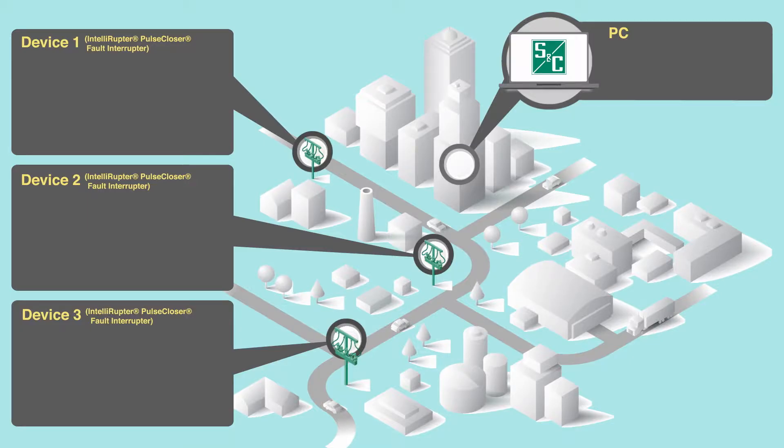Before leaving to install Speednet gateways in the field, carry out the following pre-installation steps. Step 1: Contact the cellular service provider for the cellular network selected and establish cellular service. Step 2: Obtain a SIM card for each gateway.